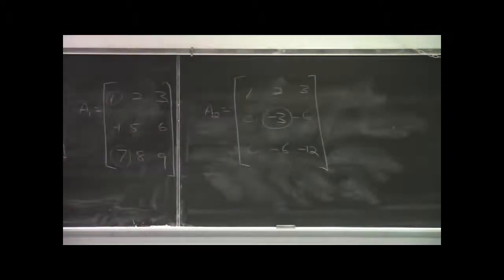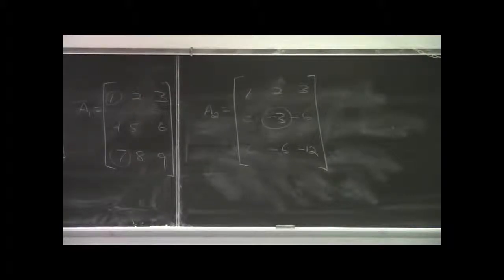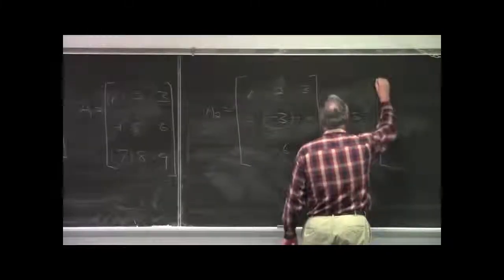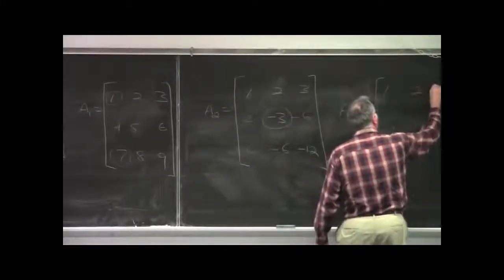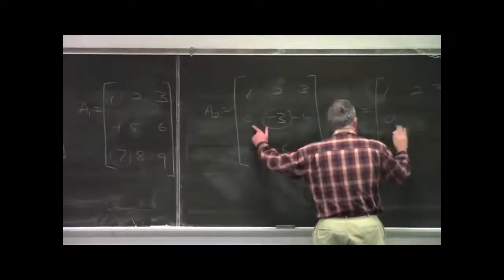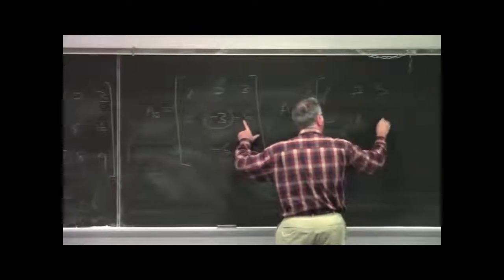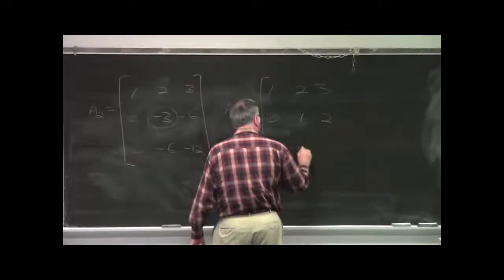Then, we want to make this element a plus 1. What kind of operation would make that a plus 1? Multiplied by a negative 1 third? Yes. Just multiply row 2 by a negative 1 third. Doing that, we would get a 3. 1, 2, 3. That stays a 0. A minus 1 third times this gives us a 1. A minus 1 third times this gives us a 2. And, then, we have our 0 minus 6 minus 12.